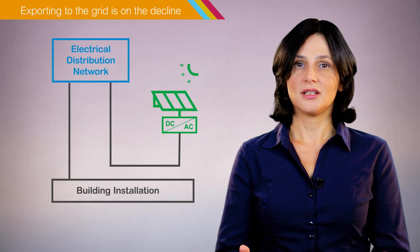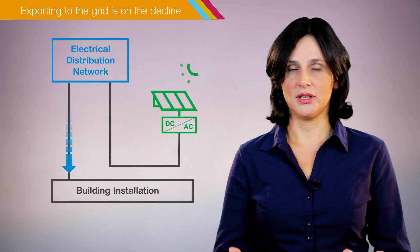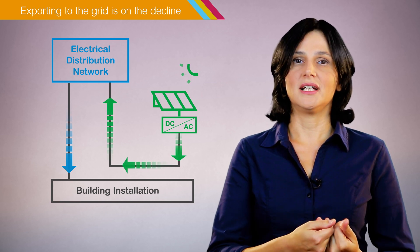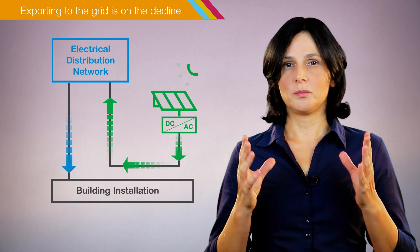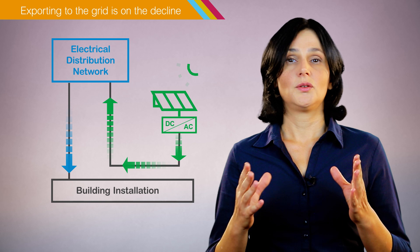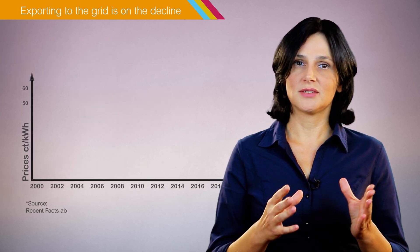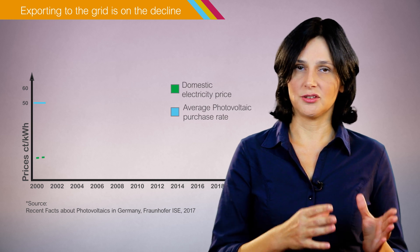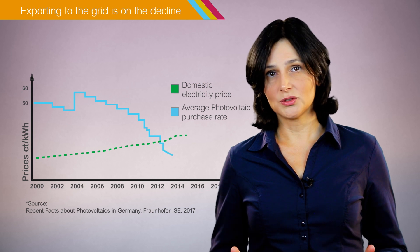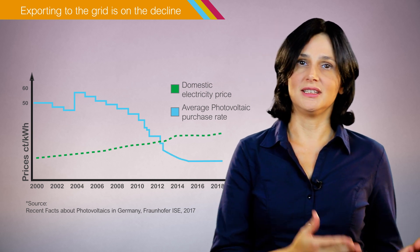Exporting to the grid used to be the most popular model because, in many countries, it was supported by subsidized campaigns to promote solar energy deployment. Today, this model is in decline because the guaranteed rates for exported photovoltaic energy have progressively decreased, becoming even lower than end-user electricity purchasing rates.